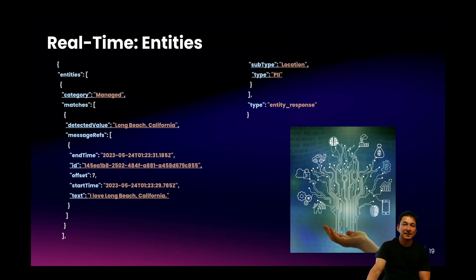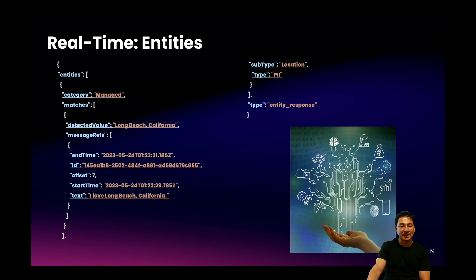In the real-time use case using the WebSocket interface, this is what an entity event notification looks like from the Symbol platform. This is also very similar to what the asynchronous API looks like. Some fields to take note of are the detected value, the message ID where the entity originated from, and finally the category, type, and subtype for the entity.